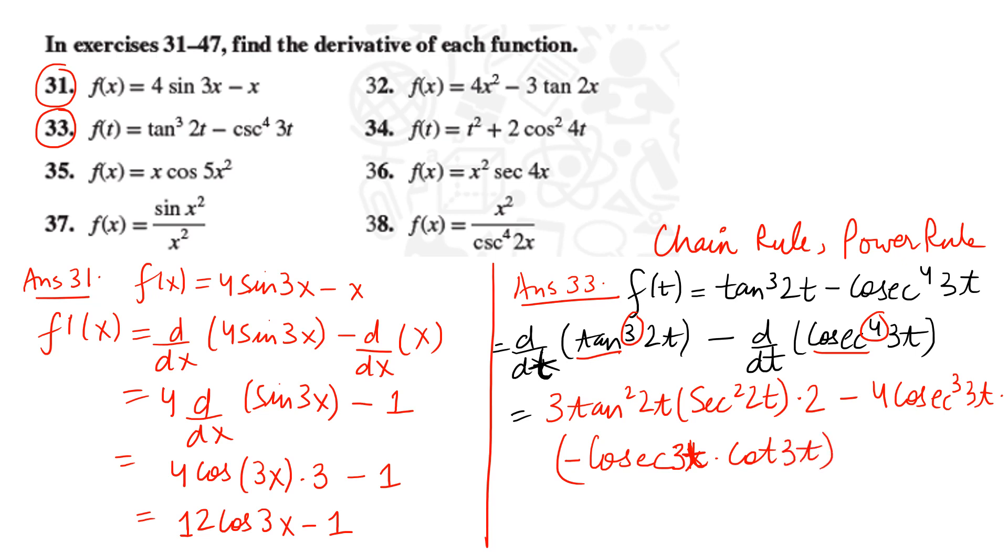The derivative of cosecant is minus cosecant x multiplied with cot x. But here x is not there—3t is there, so we will write 3t. Be careful on that. Now after that, 3t will also be differentiated, so we multiply by 3. Let's combine and write the final step. 3 multiplied with 2 gives you 6, tan²(2t) multiplied with secant²(2t). 4 with 3 gives you 12.